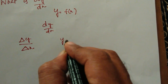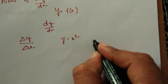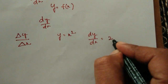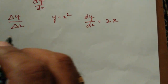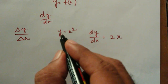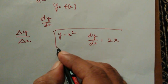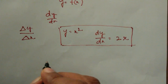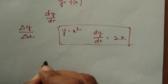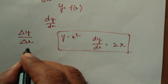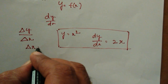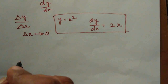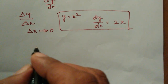We write dy by dx where y is equal to x square. When y is equal to x square, dy by dx is 2x. Now, dy by dx is delta y by delta x where delta x is tending to 0. Delta x is infinitesimal — infinitely very small — so that delta x tends to 0.